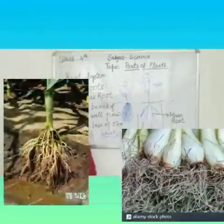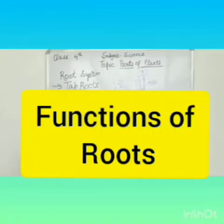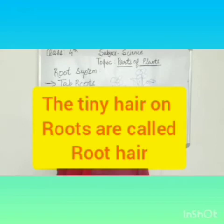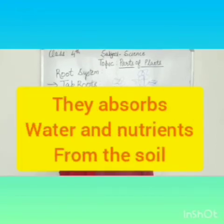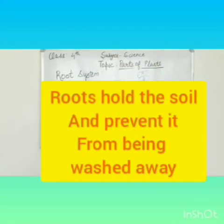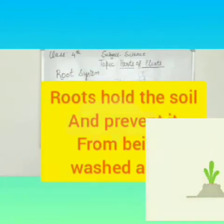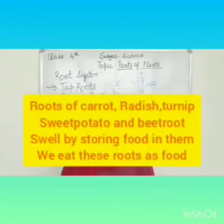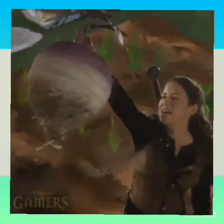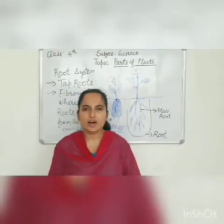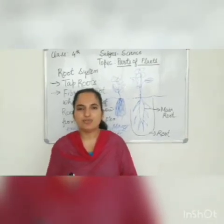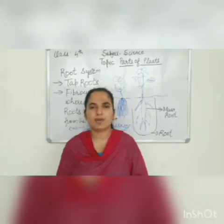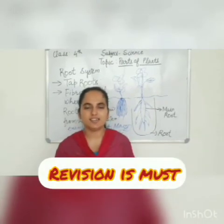Now the functions of roots: roots hold the plant firmly in the soil. The tiny hair on the root are called root hair — they absorb water and nutrients from the soil. Roots hold the soil and prevent it from being washed away. Roots of carrot, radish, turnip, sweet potato, and beetroot swell by storing food in them — we eat these roots as food. So this is all about the functions of roots. I hope you will now get to know about different types of roots, what are roots, and the whole root system. In our next video we will be studying about the next part, that is the shoot system. Till then, revise this. Thank you very much.